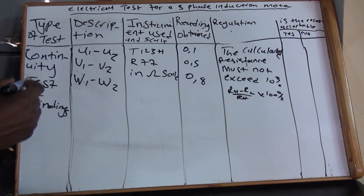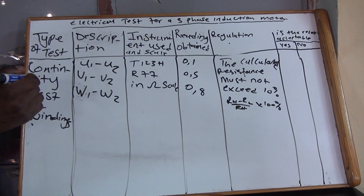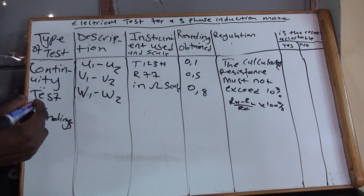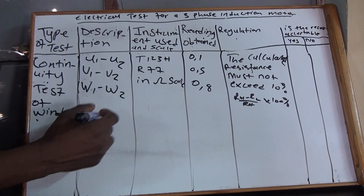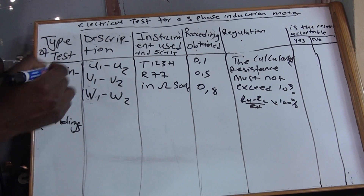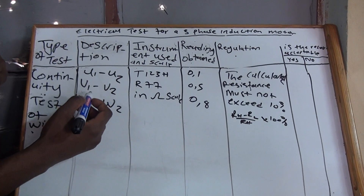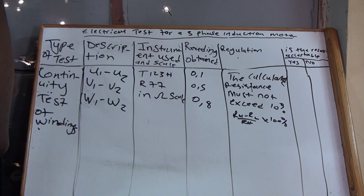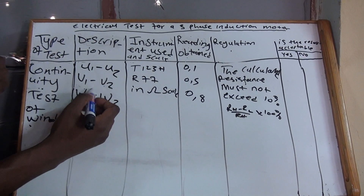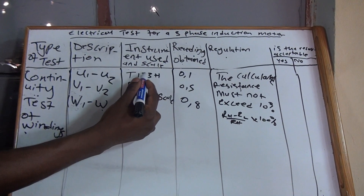The first test we're going to do is the continuity test of windings. You must write this on your paper — when they give you the sheet they will not write it, you will write the type of test. On the description you are writing what you're going to test: from which point to which point. You are going to test between U1 and U2, then V1 and V2, then W1 and W2.